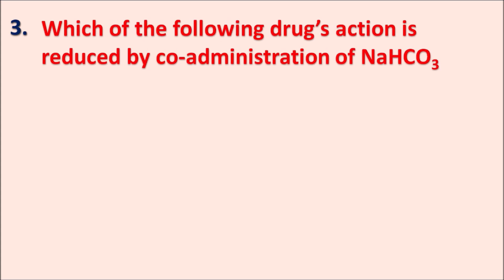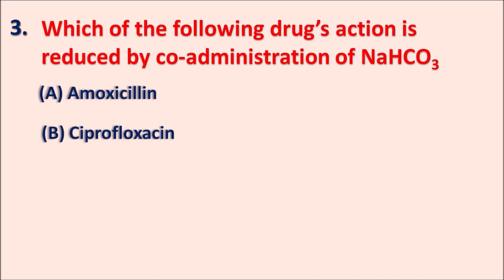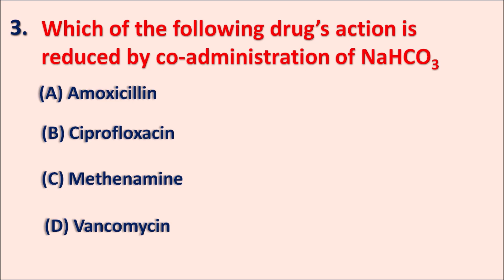Question three: Which of the following drugs has its action reduced by co-administration of sodium bicarbonate? Options: A — amoxicillin, B — ciprofloxacin, C — methenamine, D — vancomycin. Sodium bicarbonate is an antacid and urinary alkalinizer, so it may interfere at the stomach or urinary tract. Among these drugs, methenamine is the one acting at the urinary tract — the right answer is methenamine, also called urotropine.